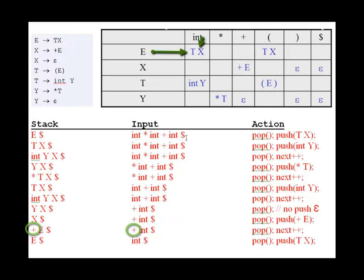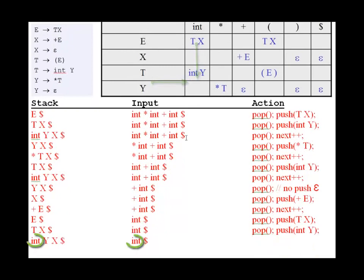Next, we have E and int, so we pop and push TX. Then we have T and int, so we match those, pop, and push int Y. Here we have matching ints, so we pop and move next.